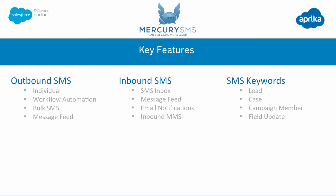One of the other key things that Mercury SMS offers you is SMS keywords. That allows you to perform a particular function within Salesforce when you receive an inbound message containing that SMS keyword. The four things that you can do via receiving a keyword are: creating a new lead, creating a new case, adding someone as a campaign member, or performing a field update on an existing record.